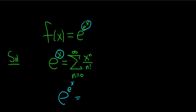This is equal to the infinite sum as n runs from 0 to infinity, and instead of x, it's e to the x. So it's e to the x to the n over n factorial.